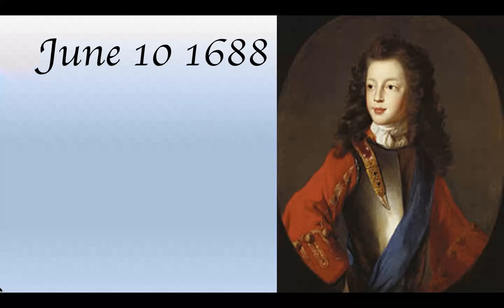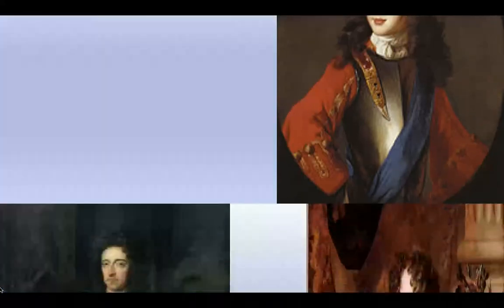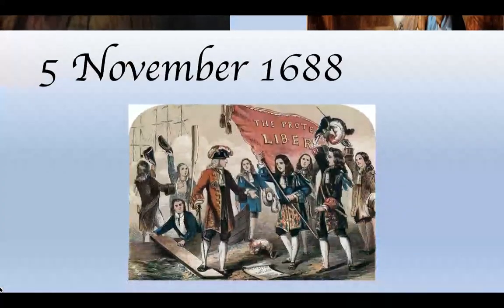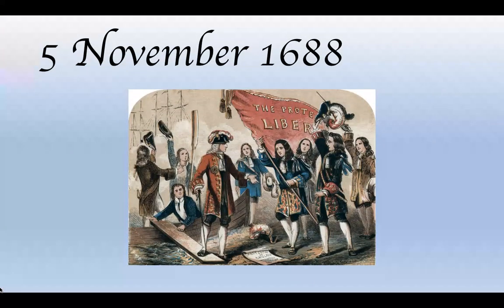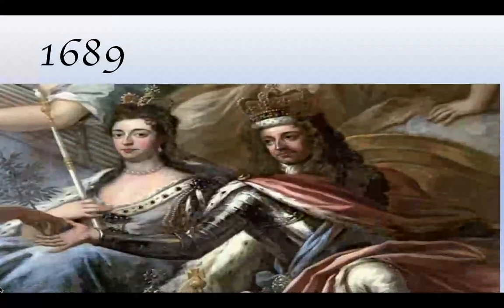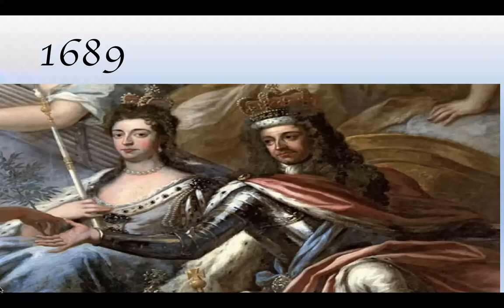After his birth, the nobles feared a Catholic dynasty, so they invited Mary's husband William of Orange to invade and take the crowns of England and Scotland. On 5th November 1688 he landed, and by January 1689 he was crowned King of England and Scotland.